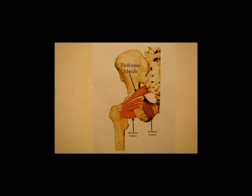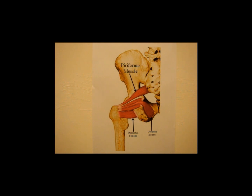It is diagnosed mainly by patient symptoms and by physical examination. In terms of anatomy, the piriformis muscle originates from the anterior aspect of the sacrum and inserts to the upper border of the greater trochanter of the femoral bone. The action of the piriformis muscle is abduction of the hip and lateral rotation of the thigh.